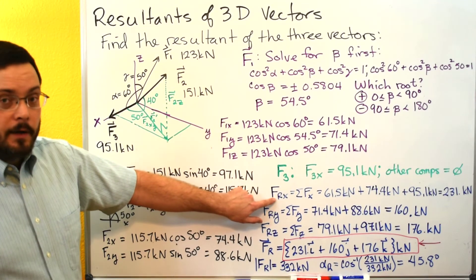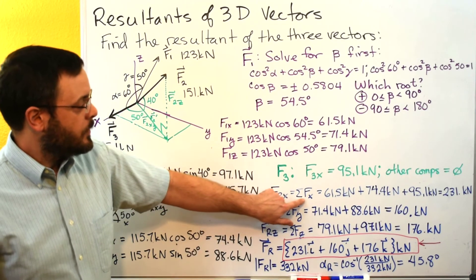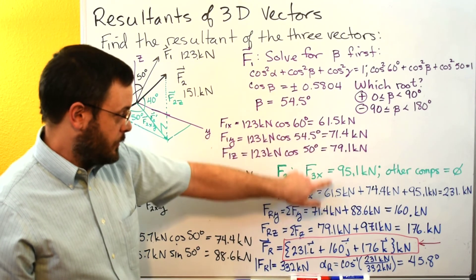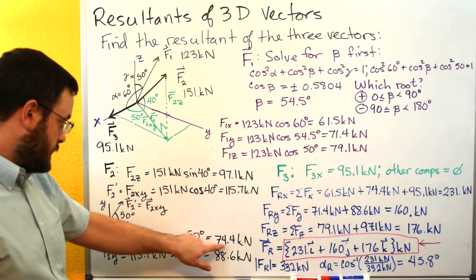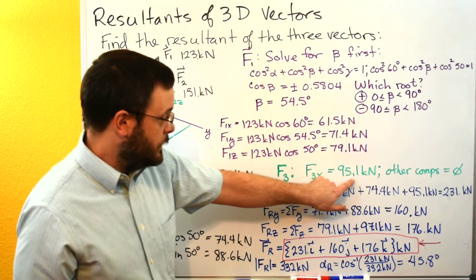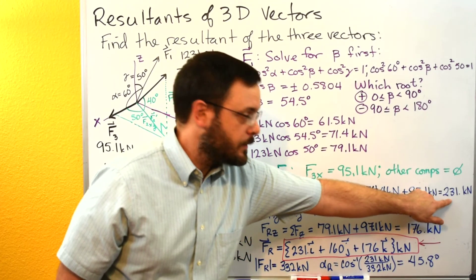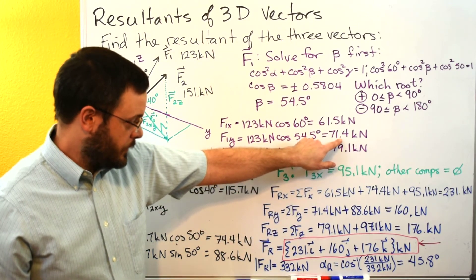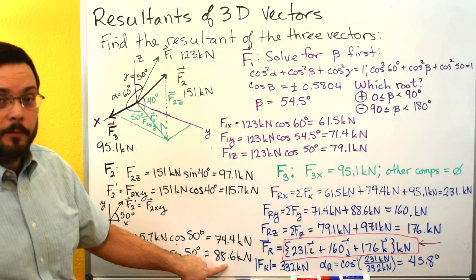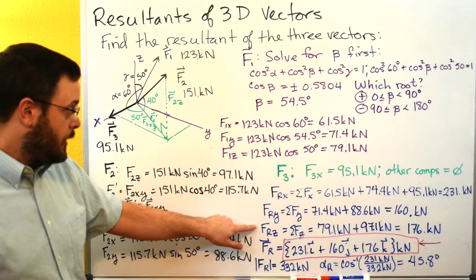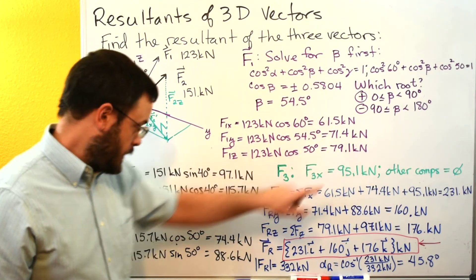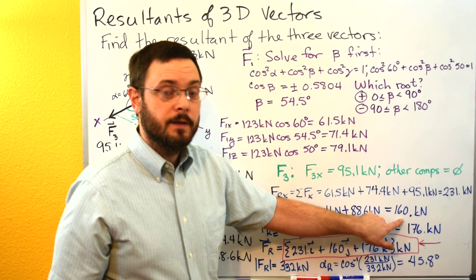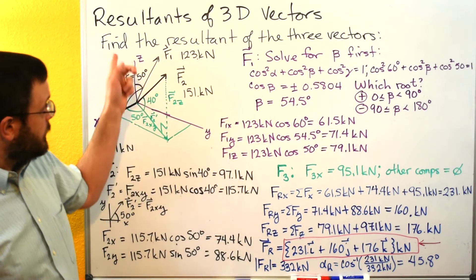Now we can get our resultant. The resultant in x is the sum of all x components: 61.5 kilonewtons from F1, 74.4 kilonewtons from F2, and 95.1 kilonewtons from F3, adding up to 231 kilonewtons. For y, we add 71.4 and 88.6 to get 160 kilonewtons. For z, we add 79.1 and 97.1 kilonewtons to get a total of 176 kilonewtons.